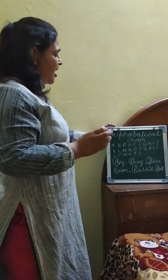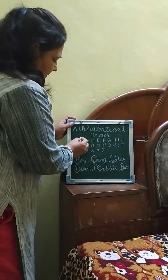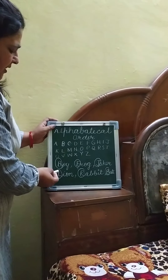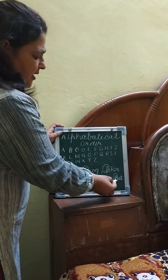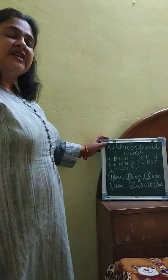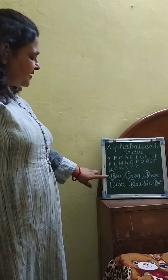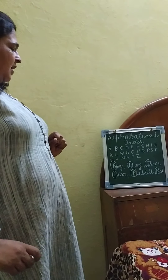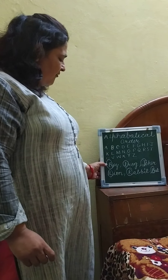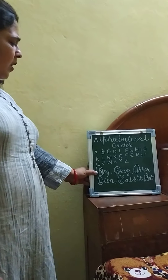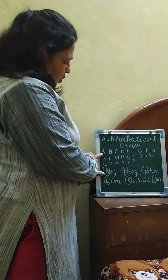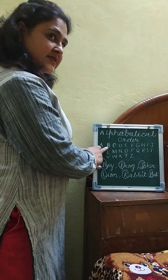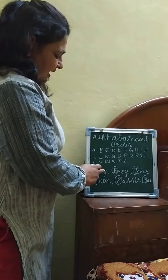I am telling you the steps again. First, write the alphabet letters A to Z. Then circle the first letter of whatever words ma'am has given you — encircle it like this. Now, look at the first letter of the first word, which is B. Is A here? No. Is B here? Yes.